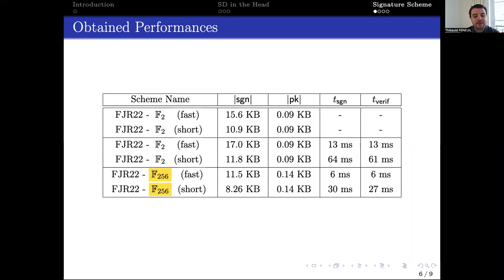For each parameter set, we proposed two trade-offs. The first one lowers the communication cost, and the second one lowers the computational cost.